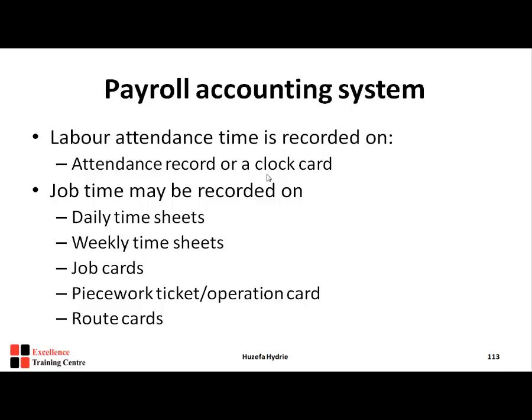Job time is recorded on daily or weekly time sheets showing how many hours are worked. Standard working hours are 48 hours per week — if someone works 50 hours, they receive 2 hours of overtime pay. Job cards record time specific to a particular job; for example, if a company has 3 building projects and an employee works on all three, the job card records 2 hours on Project A, 3 hours on Project B, and 2.5 hours on Project C.